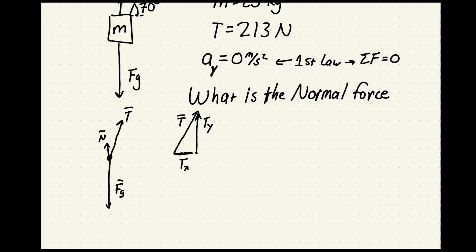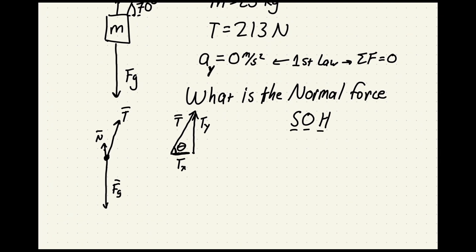So I can see that this Ty is the opposite and so our little mnemonic that we use which is SOHCAHTOA tells us sine is opposite over hypotenuse. So Ty, our opposite, is going to be Ty and our hypotenuse is going to be T. To do this calculation we'd say sine theta is equal to our opposite Ty over our hypotenuse T. I can multiply both sides by T.